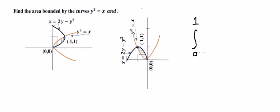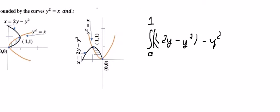And we got about 2y minus y squared minus y squared dy.